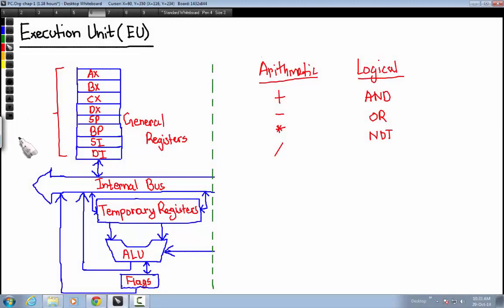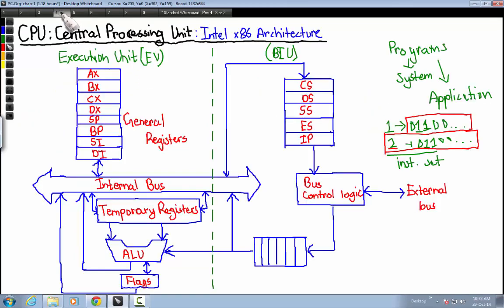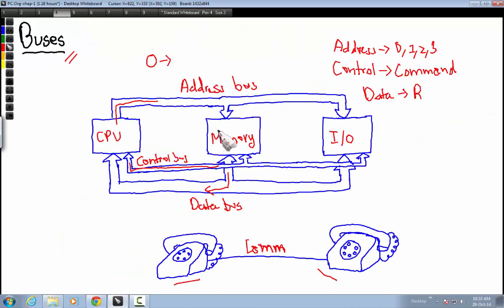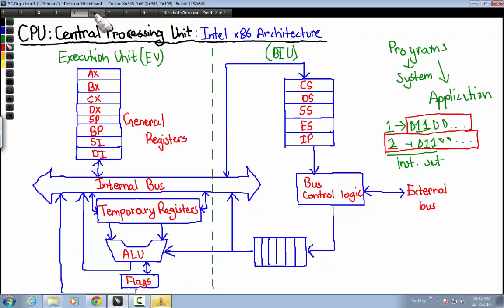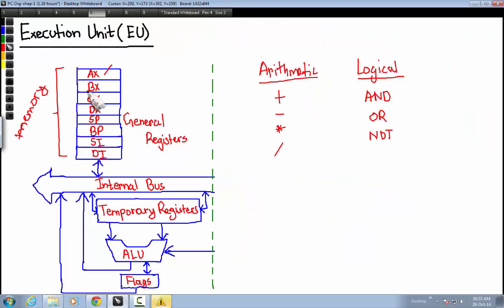These general registers are memory themselves. They work similarly to RAM and ROM, but they are referred to or addressed using their names, not using the numeric value we discussed earlier. In this memory, contents are addressed through their address numbers, but these general registers are addressed through their names.